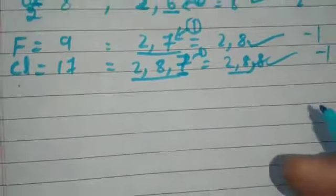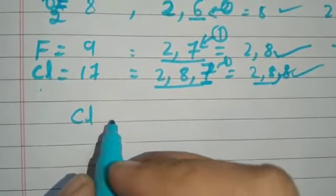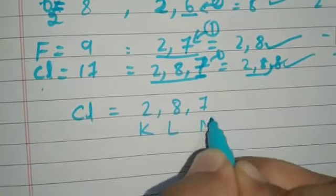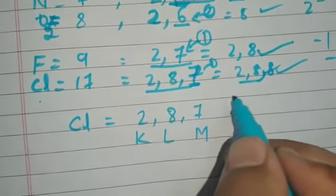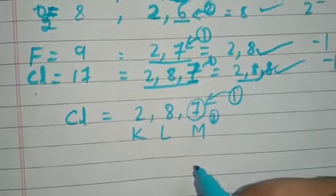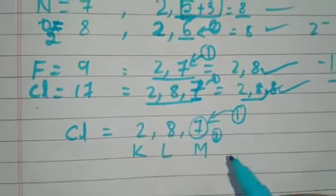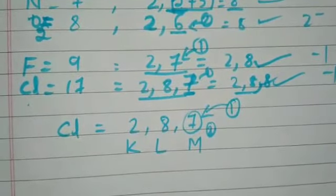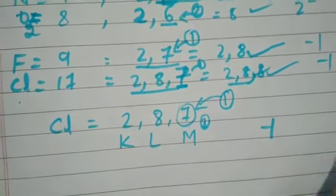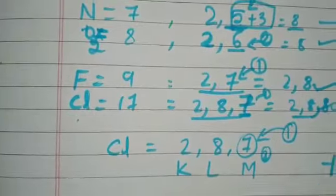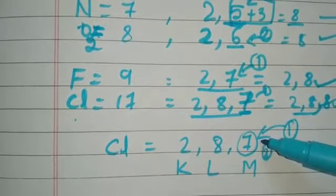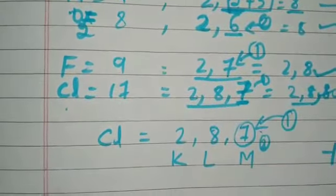On the other side, if we take chlorine — it has the configuration 2, 8, 7 in the K, L, and M shells. If the M shell gains one electron, it becomes completely stable. Since chlorine gains one electron from the other atom, the net charge becomes minus one. Chlorine has seven electrons in the outermost shell and requires one more electron to complete its octet.